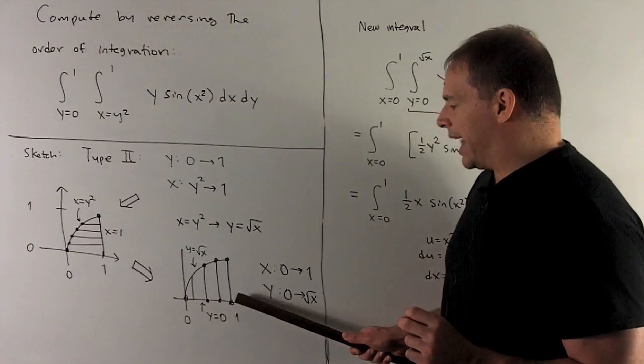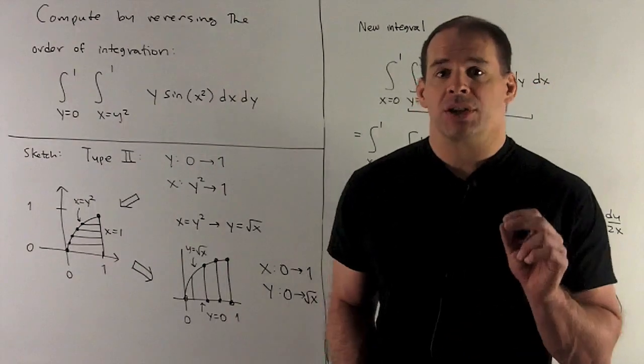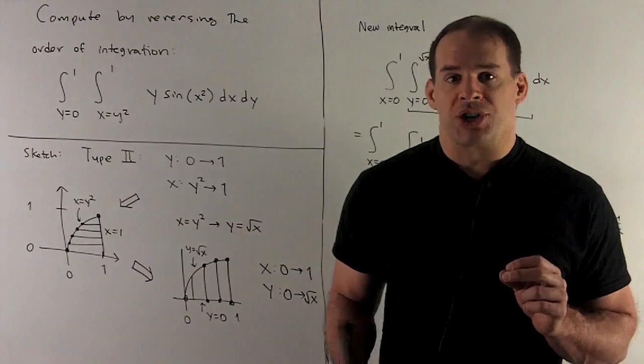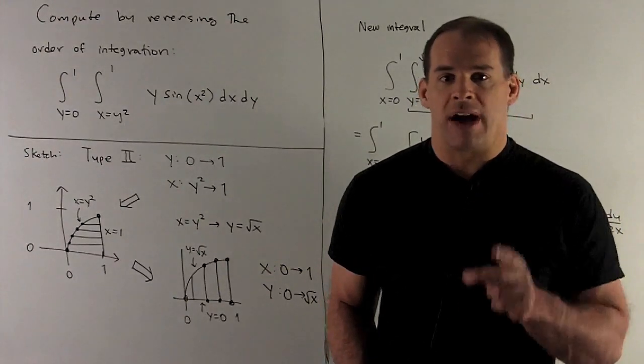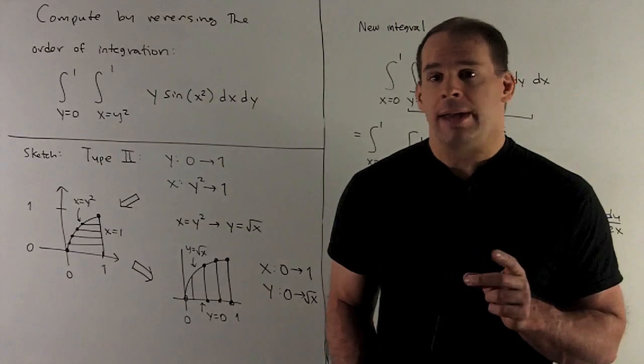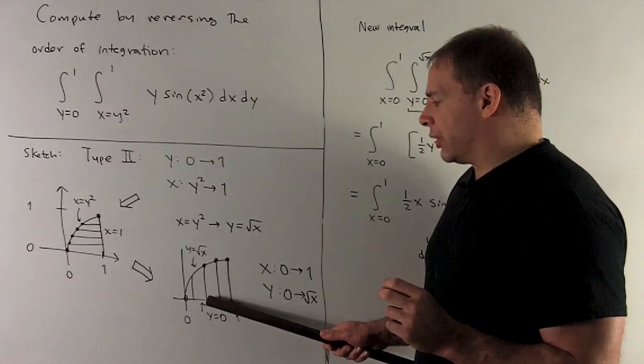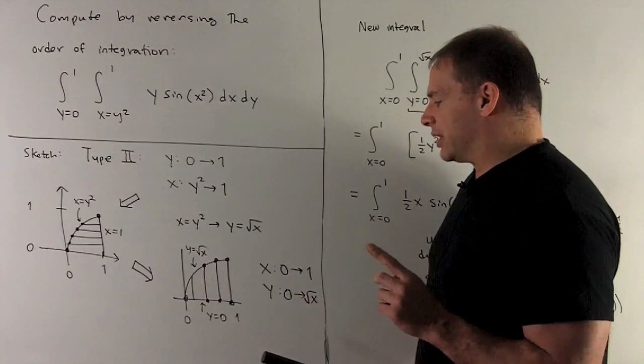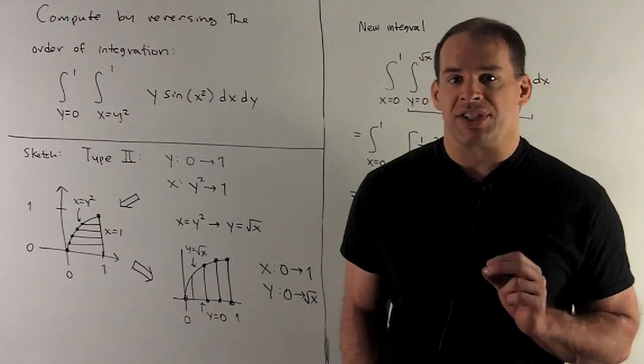Our range in x is 0 to 1, the limits for the outside integral. For the inside integral, we switch those horizontal lines to vertical lines, which tells me how we travel when I do the integral in y. We start at y equals 0, follow the line up, and hit y equals square root of x. So the limits are 0 to square root of x for the inside integral.